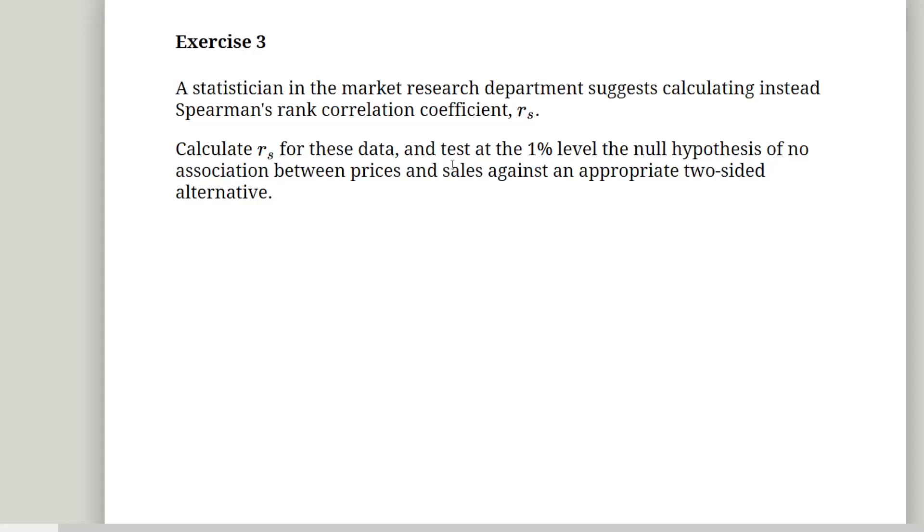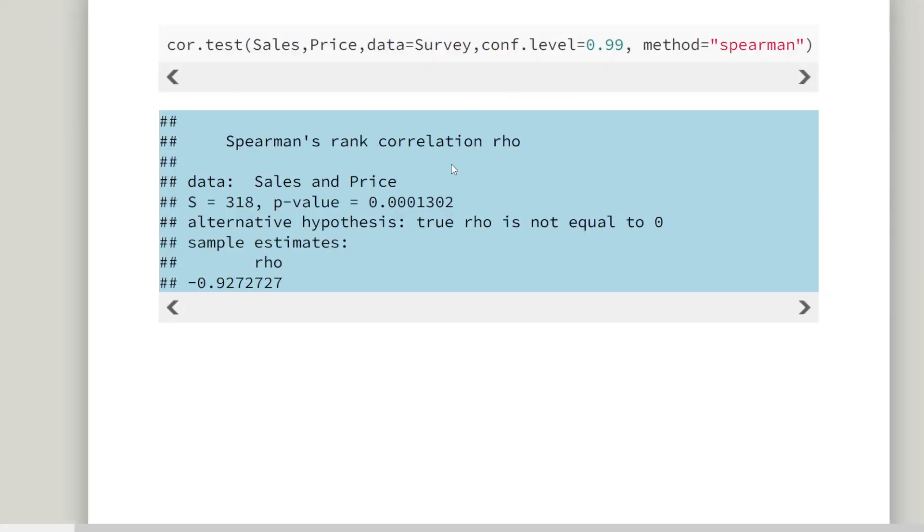Between sales and prices against an appropriate two-sided alternative. So essentially, appropriate two-sided alternative. We don't really do much with that. So cor.test, sales and price, the name of the variables. The data set we're drawing this from, data frame, data equals survey, confidence level equals 0.99. And additionally, what we specify is method equals Spearman. Now, by the way, I could actually just use method equals Spearman just to actually get the correlation coefficient, the Spearman correlation coefficient only. Cor, sales, price, data equals survey, method equals Spearman. Just to get this value here. Now, it's called Spearman's rho. That's the sort of informal term for it. Now, this is the test statistic there, 318.